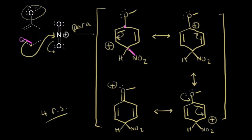I drew these resonance structures starting with the benzene ring with electrons in a specific position. If you started with a different resonance structure of benzene, your resonance structures might look a little different from mine, and you'll see different versions in different textbooks. So always look at what your professor does in class or your textbook and think about that on exams if they ask you to draw resonance structures for an ortho/para or meta attack.